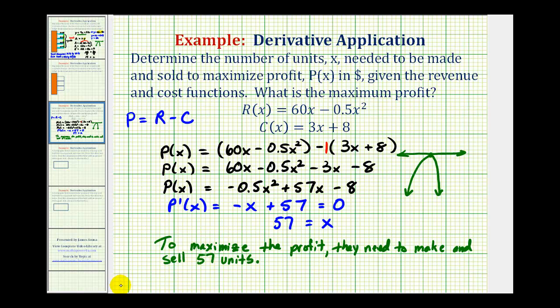Now we want to determine the maximum profit, which occurs when x equals 57. So the maximum profit would be equal to p of 57. So using one of these forms of the profit function, we'll substitute 57 for x. Let's go ahead and use this form here. So we'd have negative 0.5 times 57 squared, plus 57 times 57, and then minus 8. And I've already evaluated this to save some time. This comes out to 1,616 dollars and 50 cents.